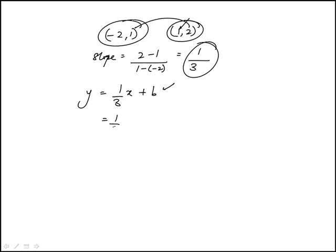So when x is 1, y needs to be 2, so b is 2 minus 1 third, which is 5 third, so the equation of the line is 1 third x plus 5 third.